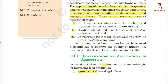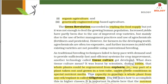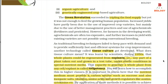Let us take a look at the three options that can be thought for increasing food production: 1. Agrochemical-based agriculture, 2. Organic agriculture, 3. Genetically engineered crop-based agriculture. The green revolution succeeded in tripling the food supply, but yet it was not enough to feed the growing population. Increased yields have partly been due to the use of improved crop varieties, but mainly due to better management practices and use of agrochemicals, fertilizers and pesticides. However, for farmers in the developing world, agrochemicals are often too expensive.